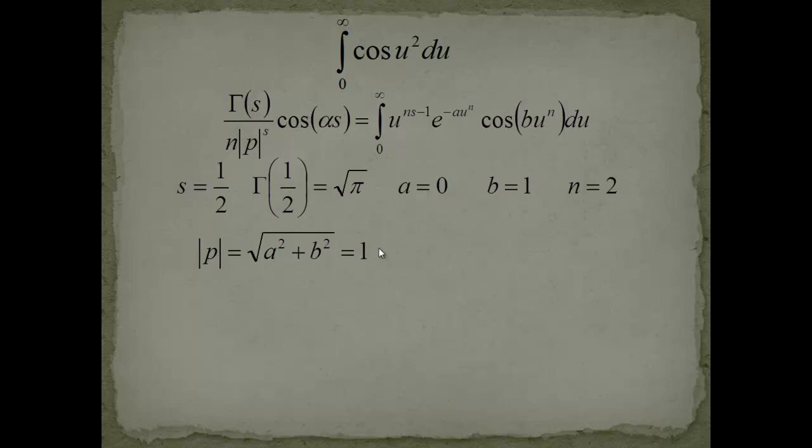The p value didn't change because a is still 0. B is equal to 1. And the alpha value is still pi over 2. Let's plug them in. We get 1 half. Gamma of 1 half. Cosinus of pi over 4.